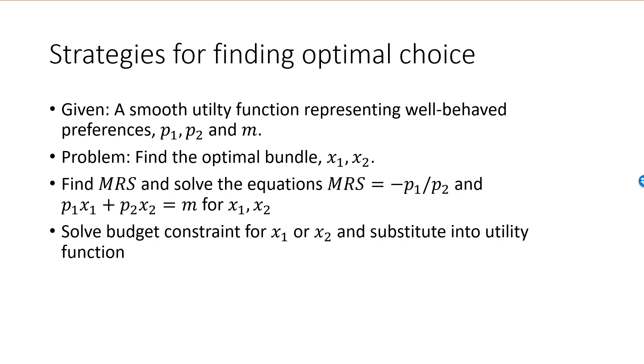Here is the second strategy. Using the constraint, we can convert our two-dimensional constrained optimization problem into a one-dimensional one. From the budget constraint, we solve for either x1 or x2. We substitute the solution into the utility function, which will now be a function of only one variable.